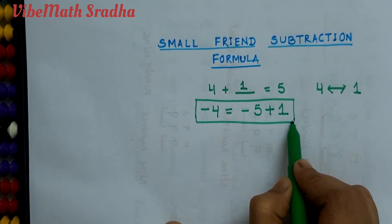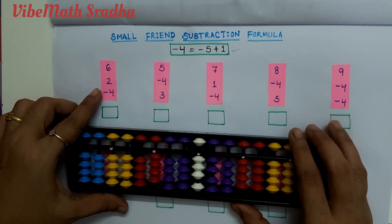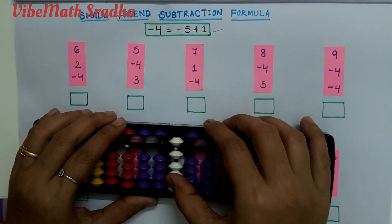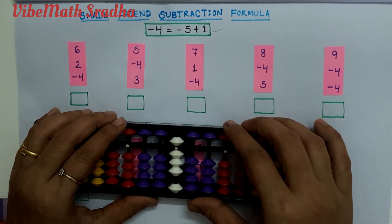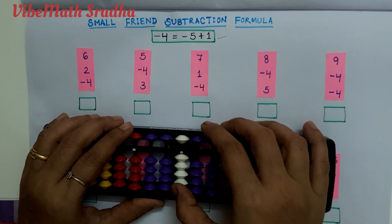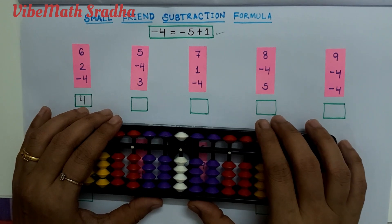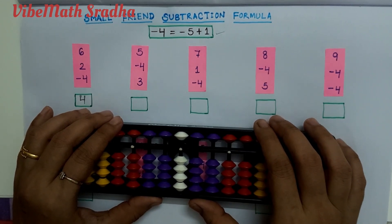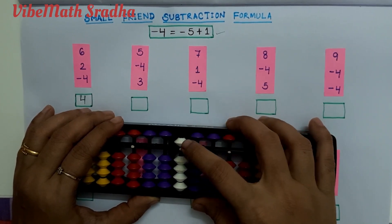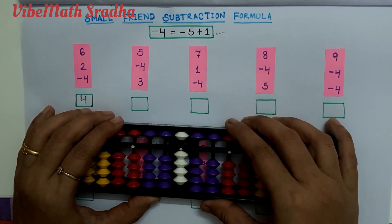We will apply this formula for solving the given examples. First question: 6 plus 2 minus 4. Applying minus 5 plus 1, the answer is 4. Moving to the second example: 5 minus 4 plus 3 minus 4. Applying minus 5 plus 1 plus 3, the answer is 4.